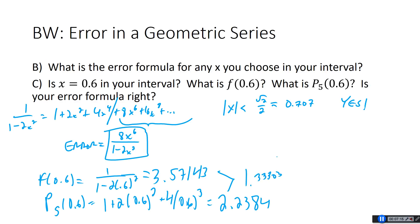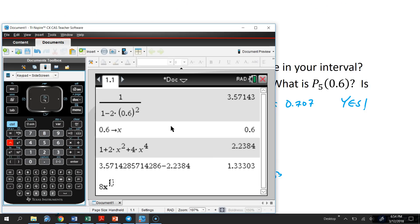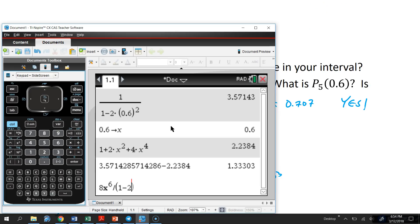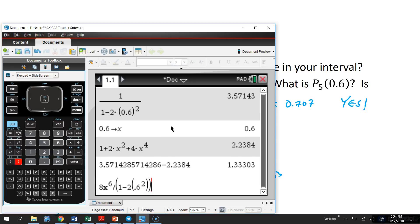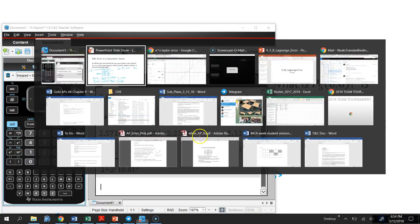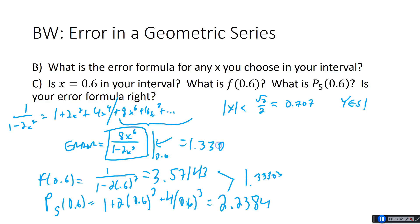Now let's see if that works when I plug 0.6 into the error formula. I already have x stored, so I compute 8x⁶/(1 - 2·(0.6)²). It is indeed 1.3303. This is kind of unique for geometric series — you can actually find the exact error, which is very rare. It's cool because it's so easy to find the rest of the geometric series.